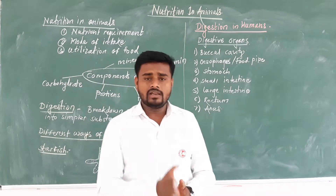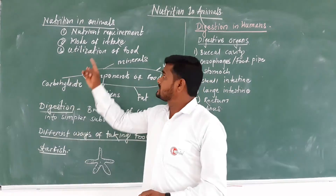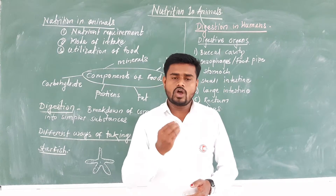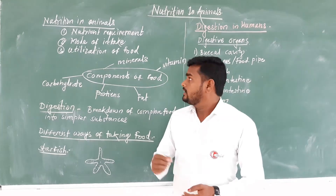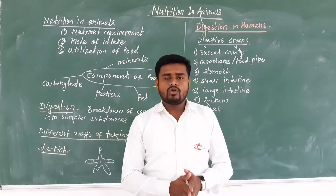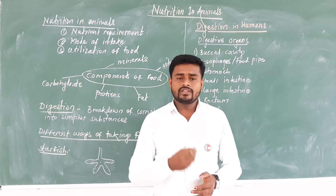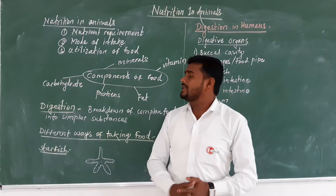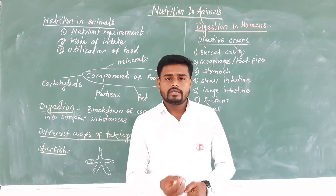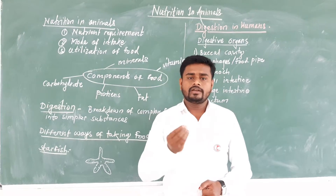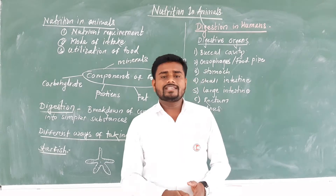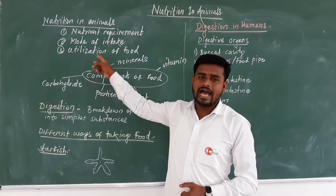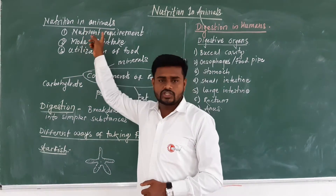In the nutrition of animals, three things are included. First, nutrient requirement — whatever nutrients are there, the animal should have those. Second, mode of intake — how the animal takes in food. Third, utilization of food — whatever food is taken inside the body is used for the production of energy. These three things are important and included in the nutrition of animals.